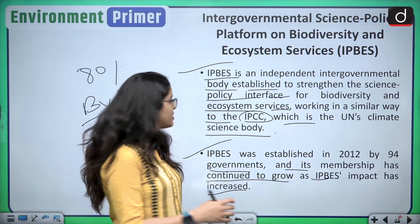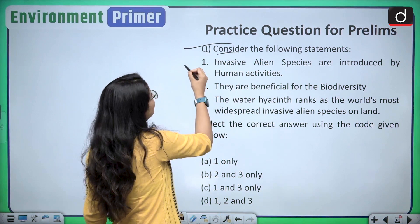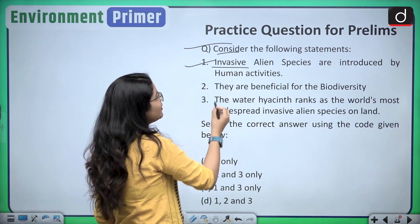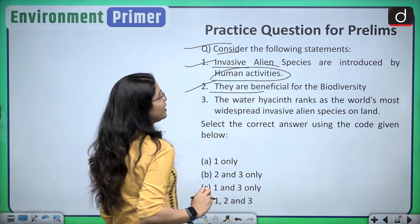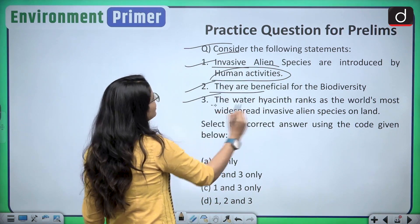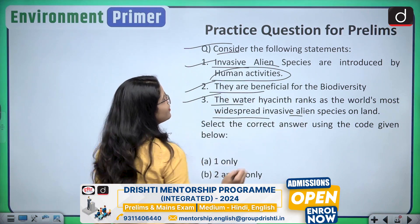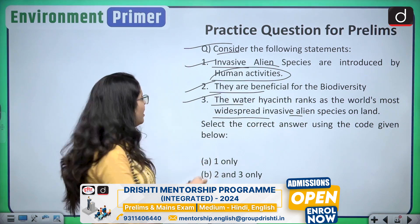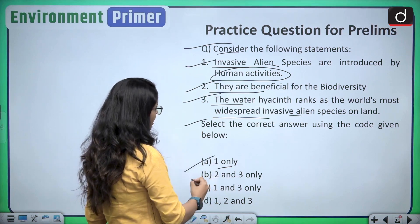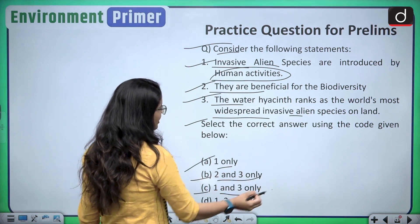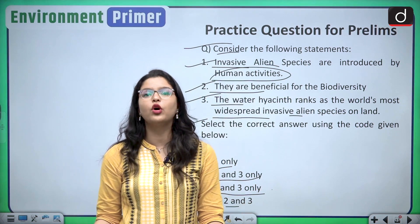Now let us discuss a practice question for your prelims examination. Consider the following statements: Statement 1 — invasive alien species are introduced by human activities. Statement 2 — they are beneficial to biodiversity. Statement 3 — the water hyacinth ranks as the world's most widespread invasive alien species on land. Select the correct answer: Option A is 1 only, Option B is 2 and 3 only, Option C is 1 and 3 only, and Option D is 1, 2, and 3. Kindly drop your answers in the comment box below.